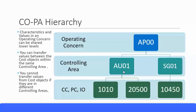We can assign two or three controlling areas to the same operating concern. When we create cost centers, profit centers, internal orders, or any other CO objects, we mention which controlling area it belongs to. For example, cost centers and profit centers can belong to one controlling area, and internal orders can belong to another. These two controlling areas can both be assigned to one operating concern.